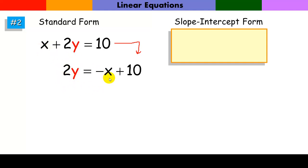Now I'm going to divide each term by a positive 2. And so, of course, I would get y alone. I'd have negative x over 2 plus 5.